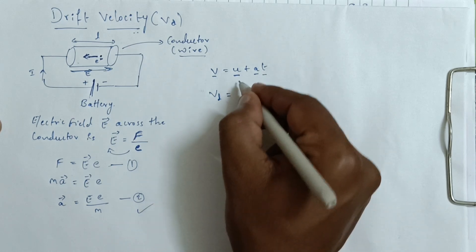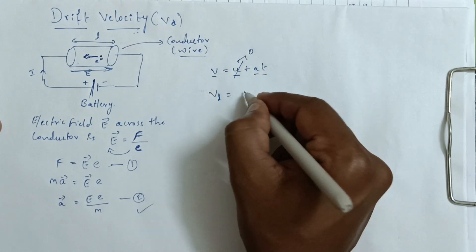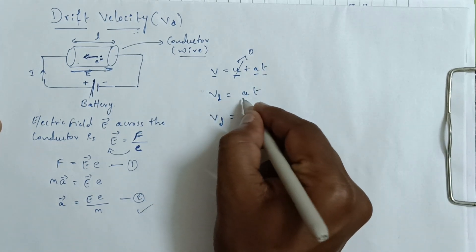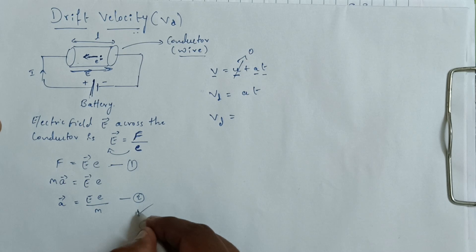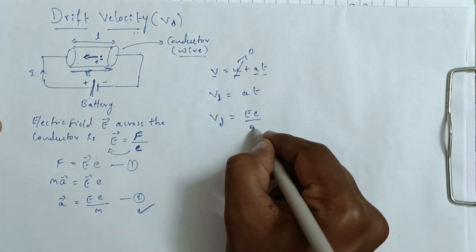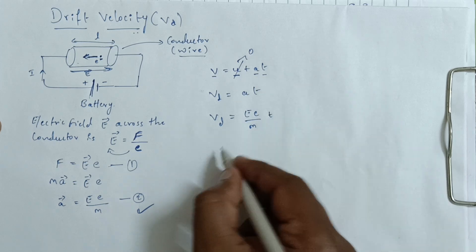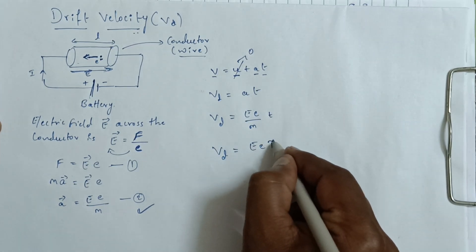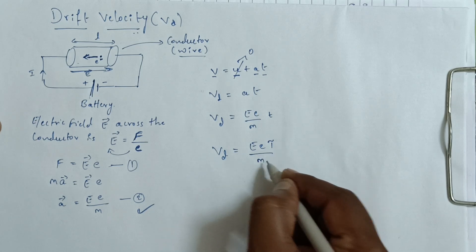VD equals U, which is zero, plus A into T. VD equals A from equation 2, Ee divided by M into T. This can be written as Eeτ divided by M.